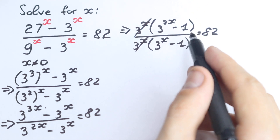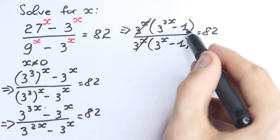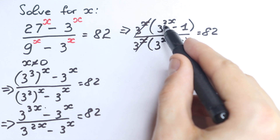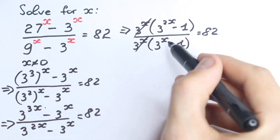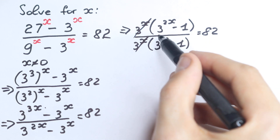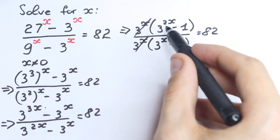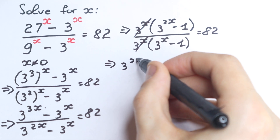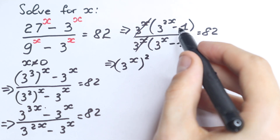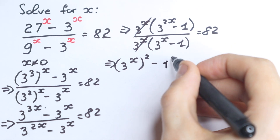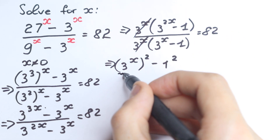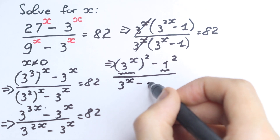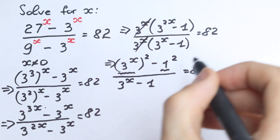A really interesting and tricky moment: in the numerator we have 3 to the power 2x minus 1, and in the denominator 3 to the power x minus 1. They look similar but they are not the same — note that the numerator has 2x. Looking closely, 3 to the power 2x can be written as (3 to the power x) squared, so the numerator becomes (3^x)² minus 1², which is a difference of squares, a² minus b². The denominator is 3 to the power x minus 1, equal to 82.